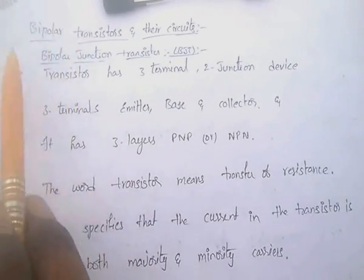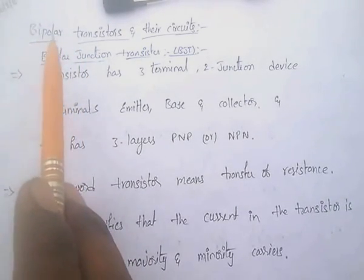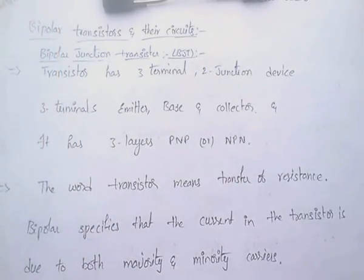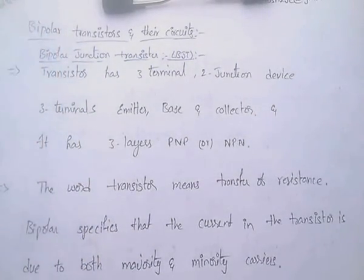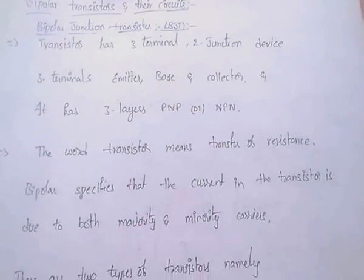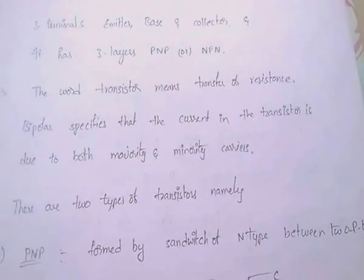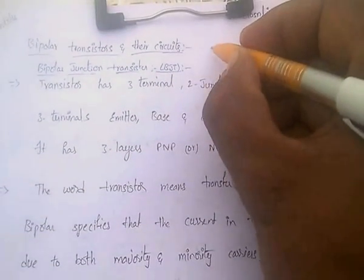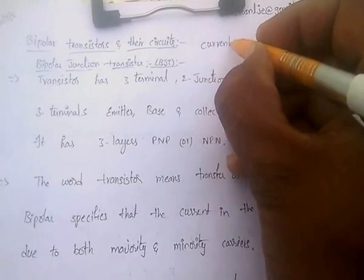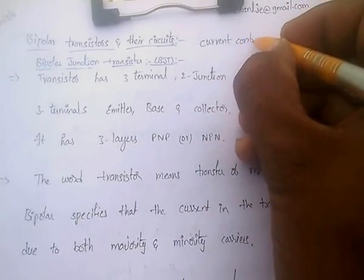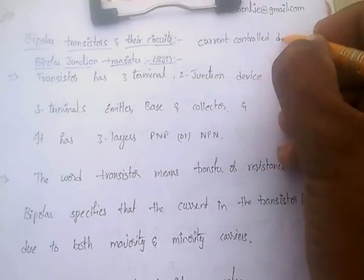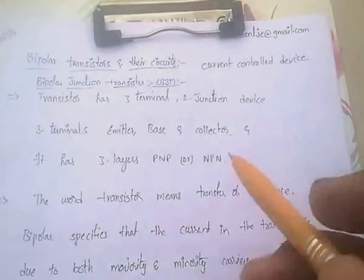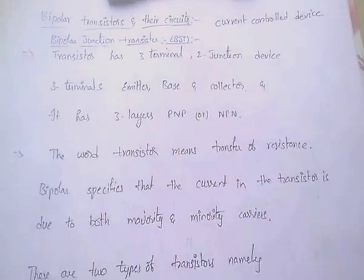The word bipolar specifies that the current in the transistor is due to both majority and minority carriers. BJT is called a current controlled device, whereas FET is a voltage controlled device.